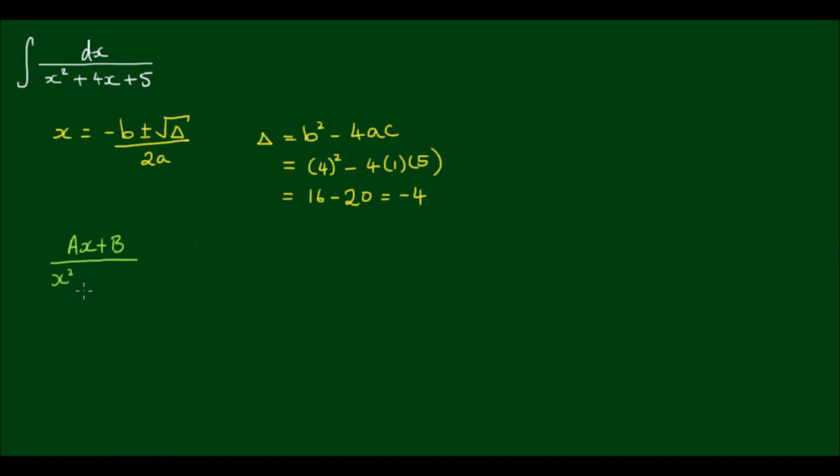So I write ax plus b over x squared plus 4x plus 5 is equal to 1 over x squared plus 4x plus 5. And now on the right hand side I've actually got 0x plus 1 as my numerator. So I know straight away that a is going to equal 0 and b is going to equal 1. So we're right back where we started which means we can't actually decompose this expression at all.